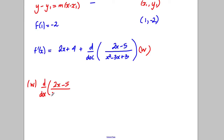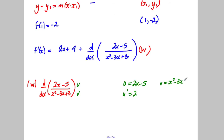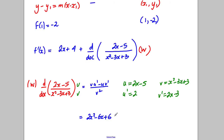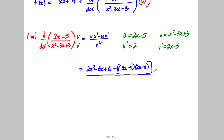This is a quotient rule where u = 2x − 5 and v = x² − 3x + 3. So u' = 2 and v' = 2x − 3. The quotient rule formula is (v·u' − u·v') / v². So: v·u' = 2(x² − 3x + 3) = 2x² − 6x + 6; and u·v' = (2x − 5)(2x − 3). All over (x² − 3x + 3)².